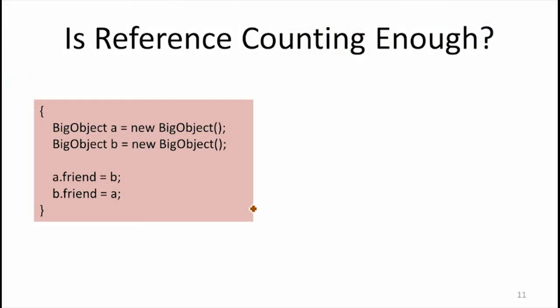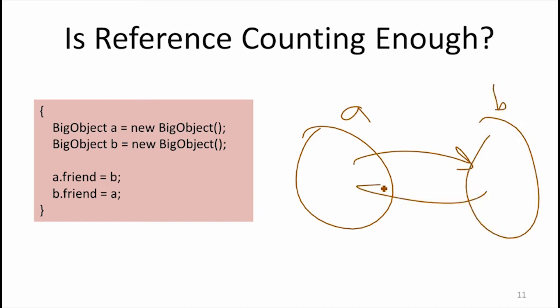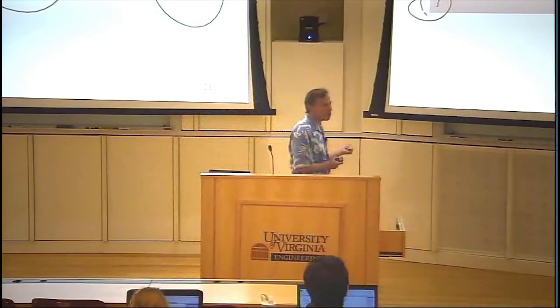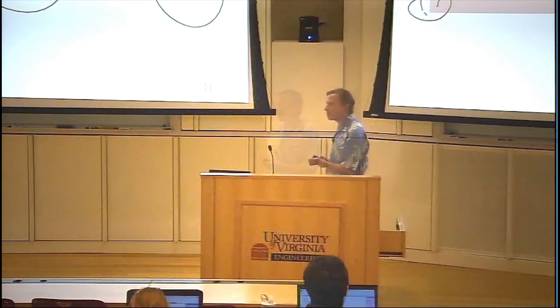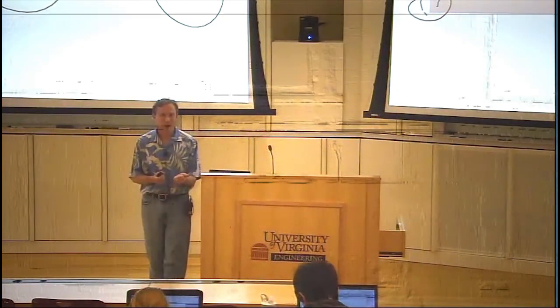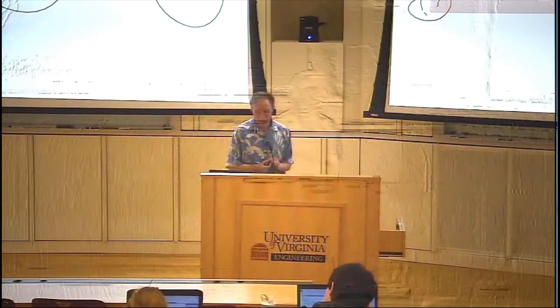Here's an example in code: object A references object B and they reference each other. When we go out of scope, we've lost those references but those two objects still each have one reference, so they won't ever be reclaimed without also having a garbage collector. This is one big problem with reference counting — you're not going to collect all the garbage. The other problem is you can't do the compacting. If you want good performance from your memory subsystem, you want to be able to move objects around, and reference counting doesn't provide an easy way to do that the way mark-and-sweep does.